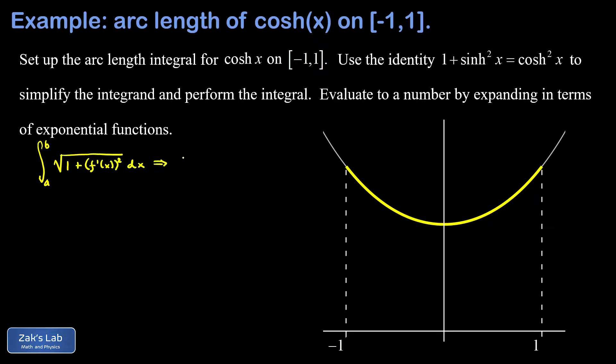So the arc length of our hyperbolic cosine function, I'll call it capital S, is equal to the integral on negative one to one of the square root of one plus the derivative of cosh squared. The derivative of the hyperbolic cosine function is the hyperbolic sine function sinh, so I end up with one plus sinh squared inside that square root.